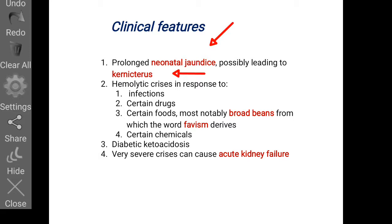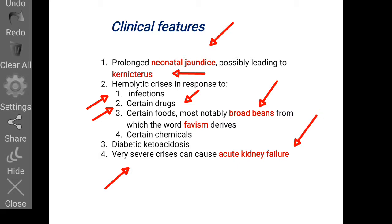A hemolytic crisis can occur in response to infections, certain drugs, or foods. Broad beans, also known as fava beans, can cause hemolysis in a patient with G6PD deficiency — this is why the disease is also referred to as favism. In very severe cases, when there is excess hemolysis, the kidneys directly start excreting hemoglobin, and the patient is said to be in acute kidney failure.